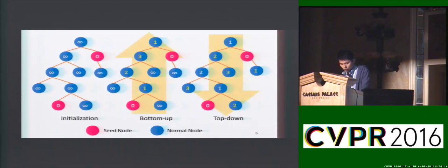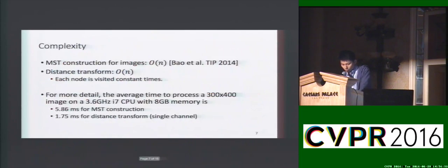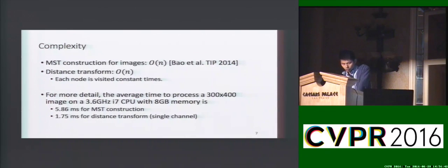Our contribution is that we propose an exact solution for tree-based distance transform. It contains a bottom-up step followed by a top-down step. In the process, every pixel is visited a constant number of times, so the complexity is linear to the number of pixels. And with the previously proposed linear-time MST construction for images, the overall complexity is also linear to the number of pixels. It can be very efficient even with a single-thread CPU.